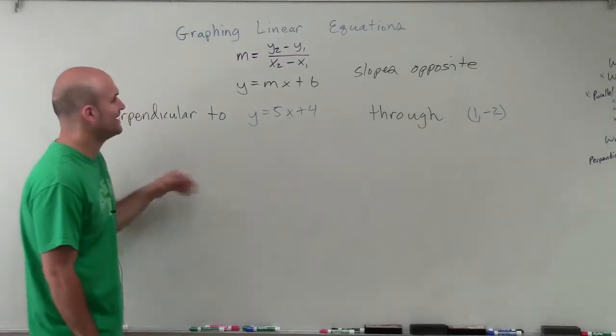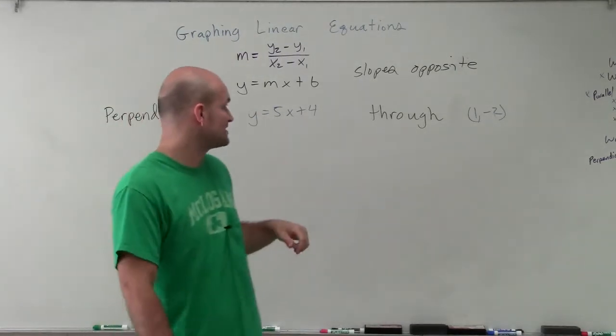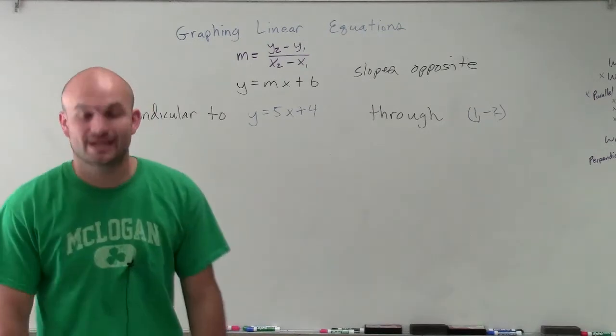Welcome! So what I'm going to do is show you how to graph a line that's going to be perpendicular to y equals 5x plus 4, but that's going to go through the point 1 comma negative 2.